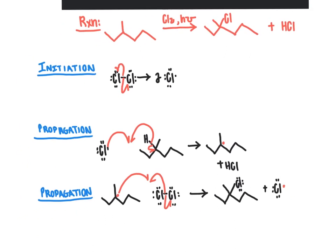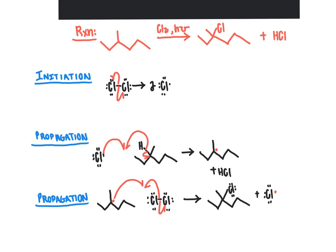Looking back at a general free radical halogenation reaction, which we talked about in an earlier segment, we see the overall net reaction shown here. We're taking an alkane molecule, reacting it with chlorine in the presence of light and heat, doing a monohalogenation reaction to install a chlorine atom at the most substituted carbon. The reaction mechanism begins with initiation, where we use homolytic bond breakage to break the bond connecting the two chlorine atoms, giving us two chlorine radicals.